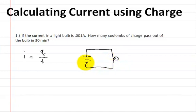Now, here in this problem, we have a current that's flowing through this light bulb, and the current is equal to .001 amps. And it's going to be passing through here for 30 minutes. What we want to find out is how many coulombs are going through here.